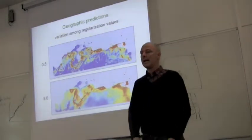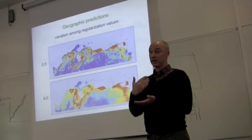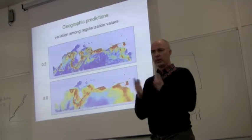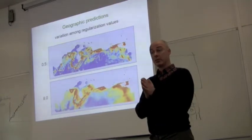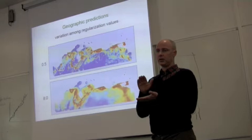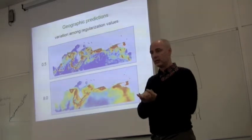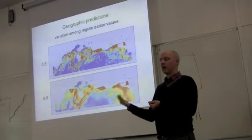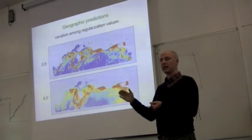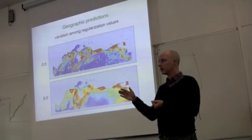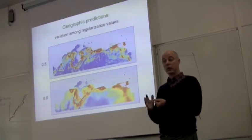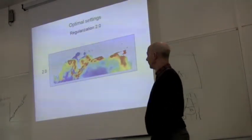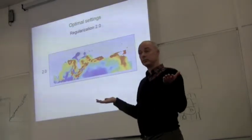Based on the quantitative evaluation statistics, we identified the regularization multiplier that seemed to be most reasonable, primarily based on lowering overfitting to reasonable levels. And then we also examined the models in geography, based on what we know about the species, what zones it inhabits, the distribution of various vegetation zones. And that also concurred that overall, the best level for this species was regularization about two.